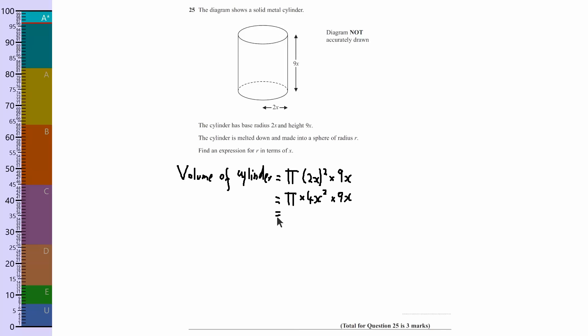So here we've got 4 times 9, which is 36. We've got the pi, and we've got x squared times x, so that's x times x times x, which would be x cubed.